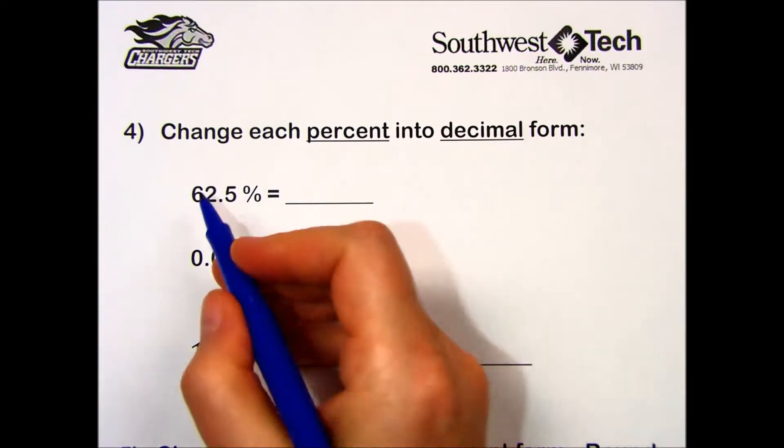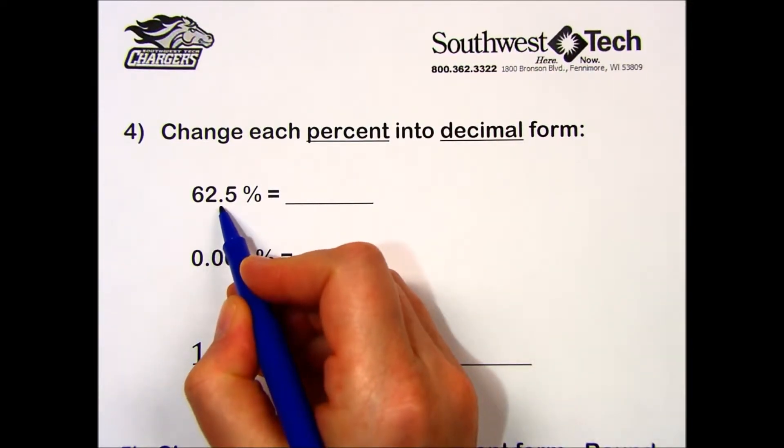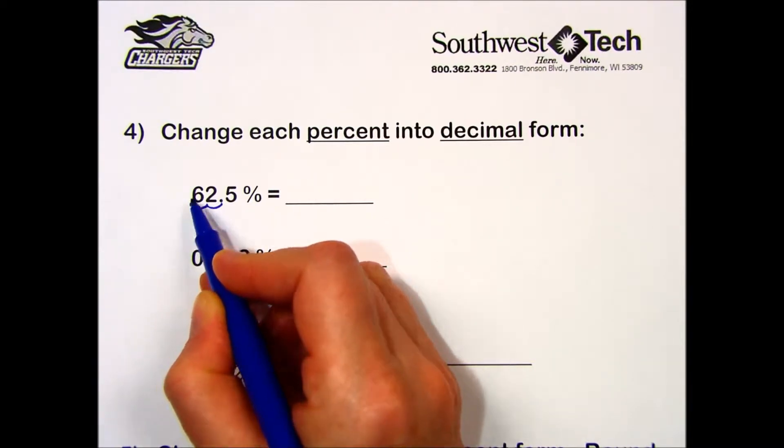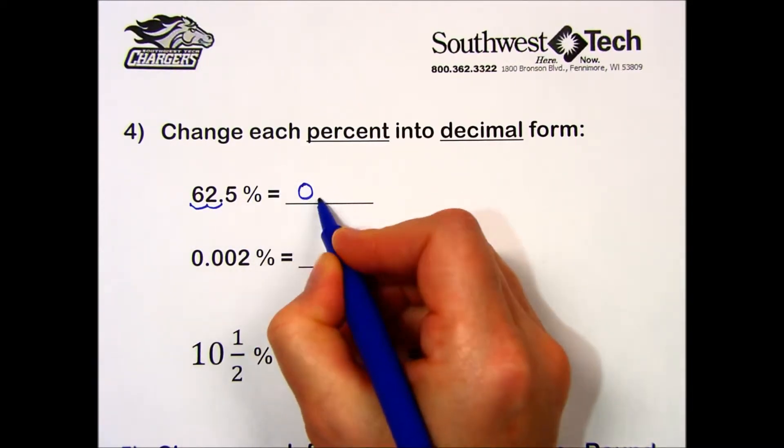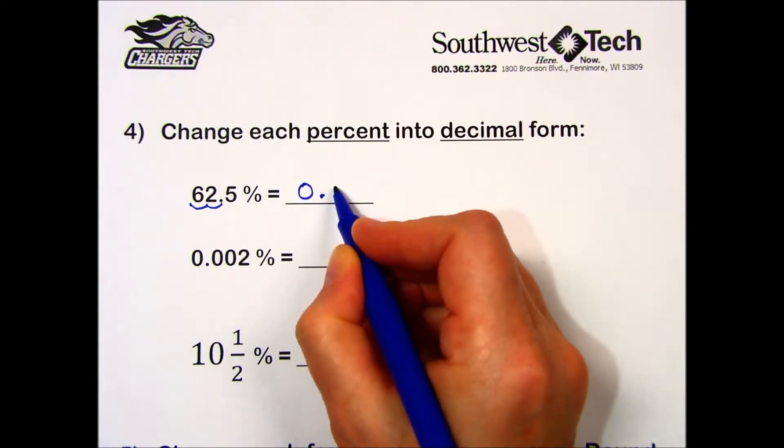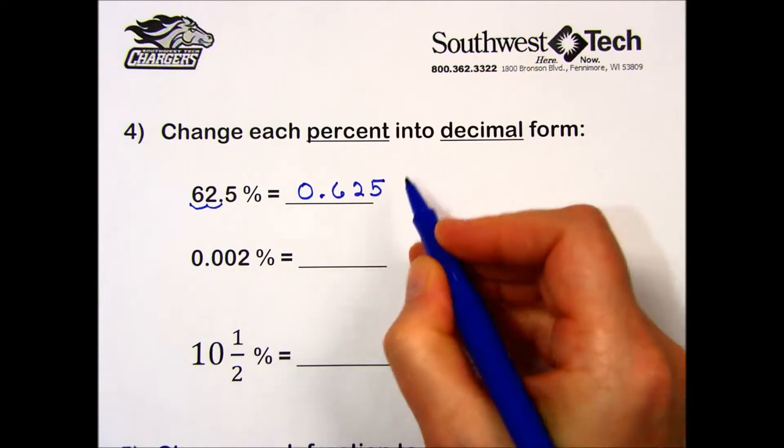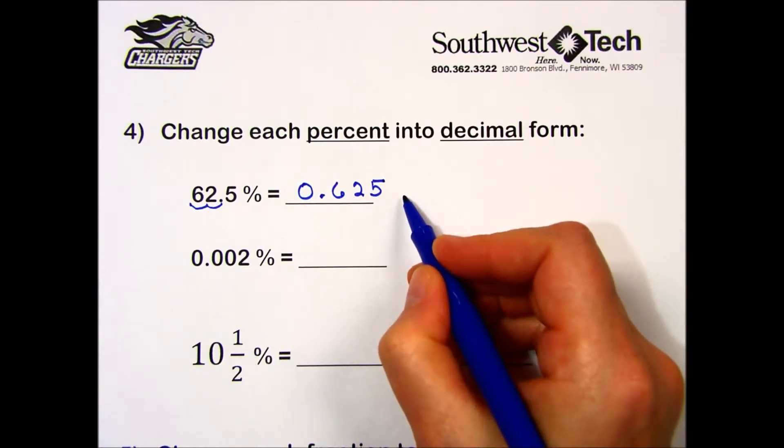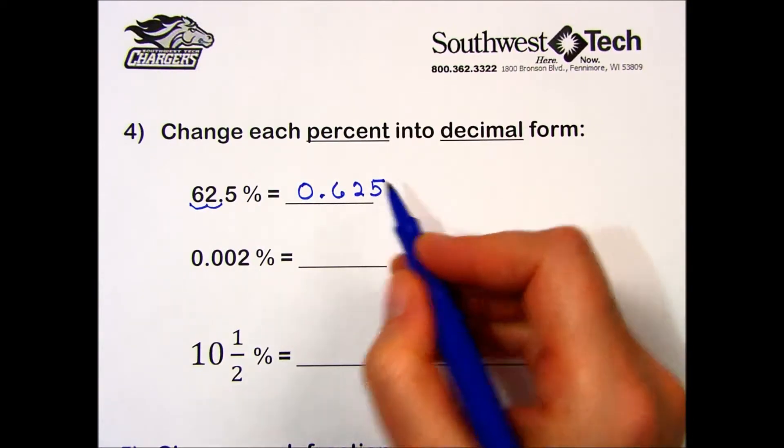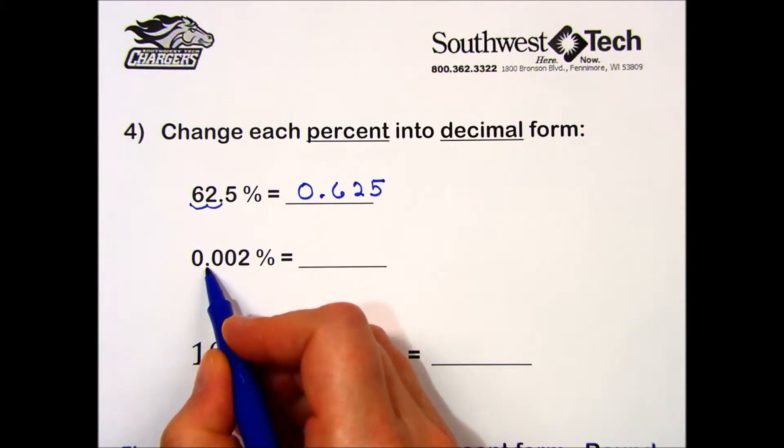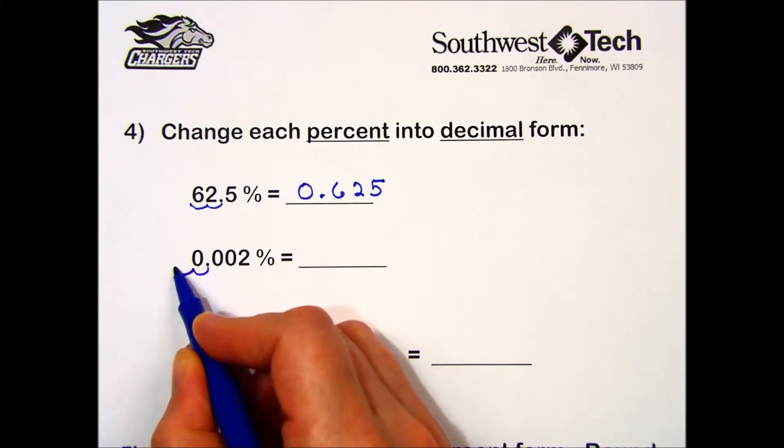In the first one I find my decimal point here. I move it two places to the left, one two, and I get 0.625. We no longer need the percent symbol.